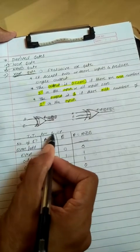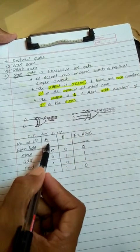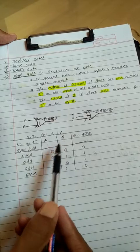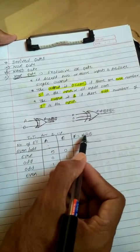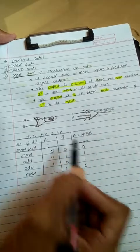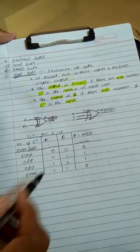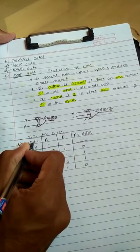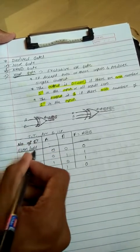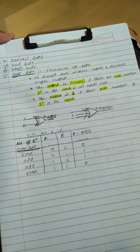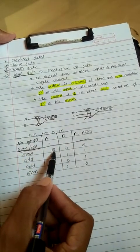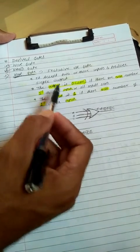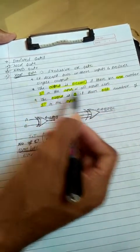Truth table for two inputs: A is the first input, B is the second input. F equals A plus-circle B is our output. We also add a column for the number of ones — whether it is even or odd. For input 0,0: zero ones — that is even. For input 0,1: one is there — that is odd. For input 1,0: one is there — that is also odd. For input 1,1: two ones — that is even.